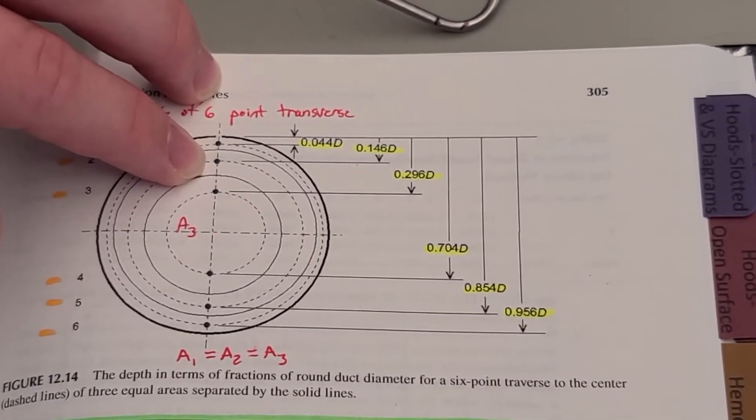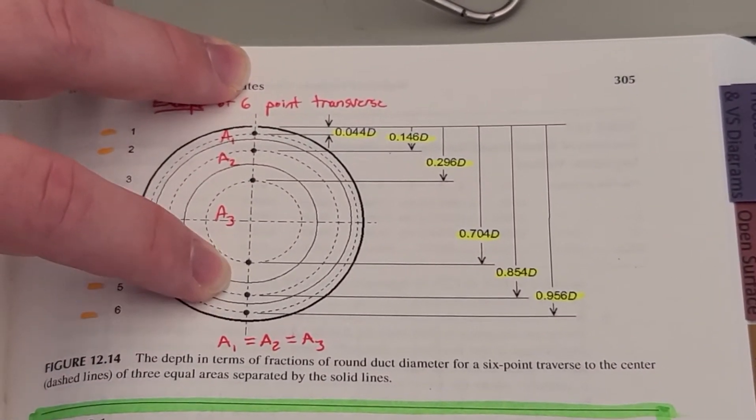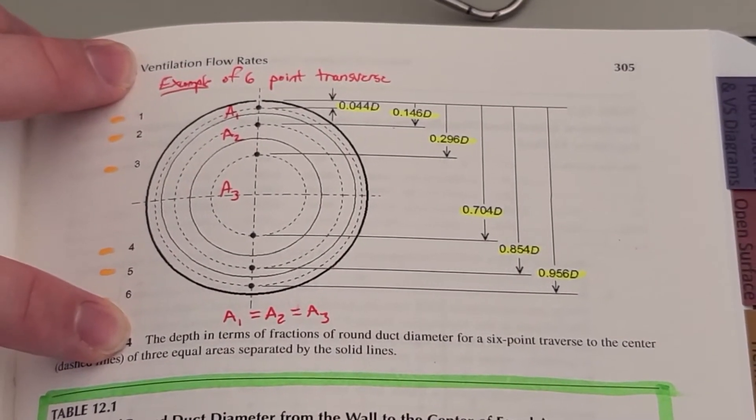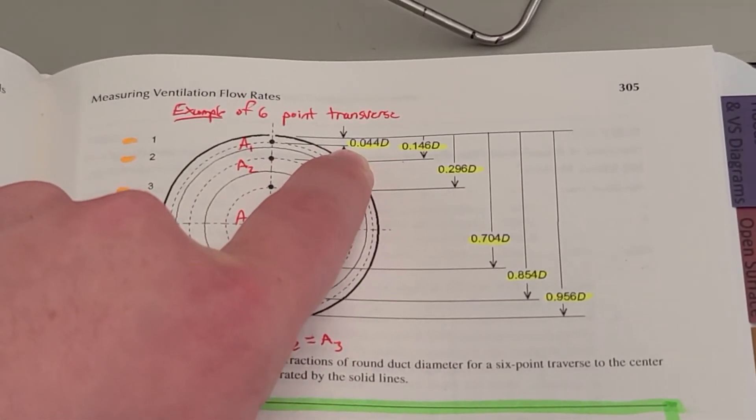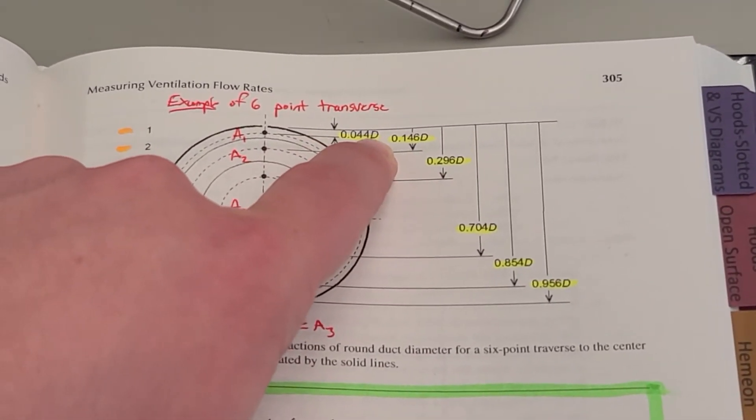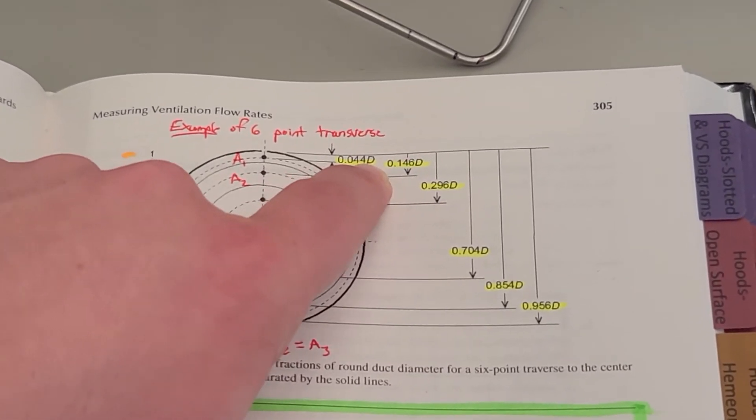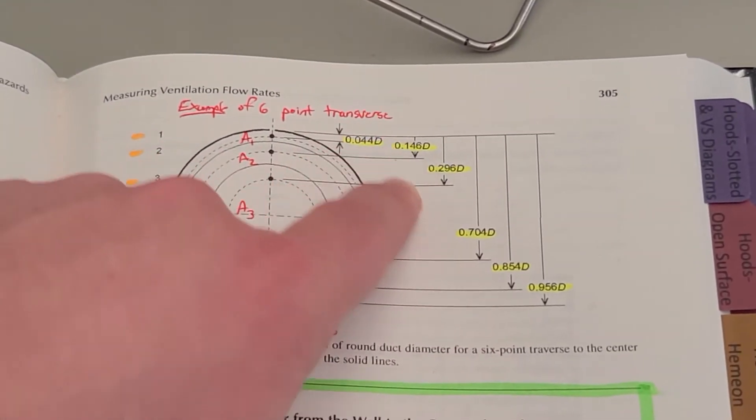The subsequent depths within the duct traverse are calculated based upon some fairly complex equations. It's much easier just to use a diagram such as this. Here we see that the first point within a duct traverse is 0.044 times the diameter of the duct. This diameter can be calculated in inches or feet, as long as you're using the same units throughout, whatever fits your duct best.